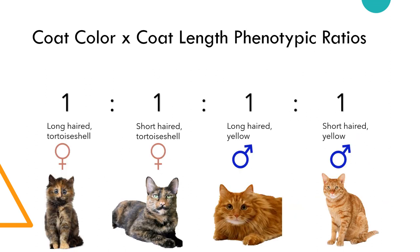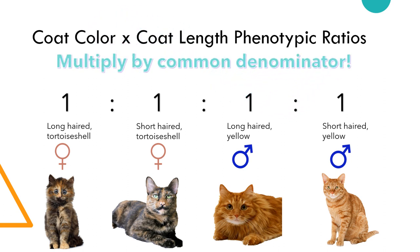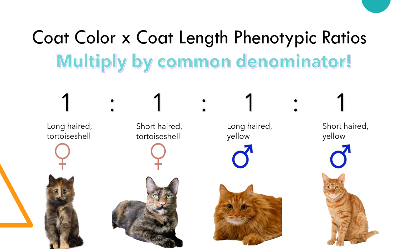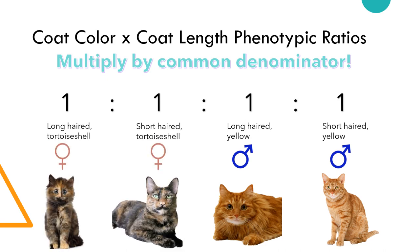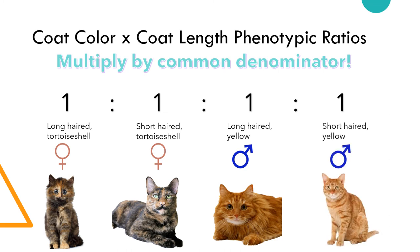Now we can construct a whole number ratio by multiplying by the denominator of our probability fractions. Once we multiply by four, we get one long-haired tortoiseshell female, to one short-haired tortoiseshell female, to one long-haired yellow male, to one short-haired yellow male.